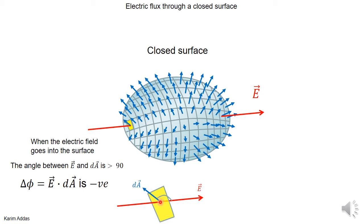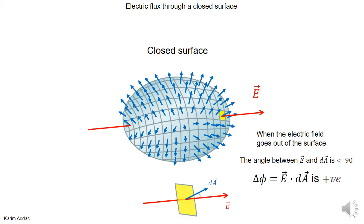In locations where the electric field line is going into the surface, the angle between the area vector and the electric field is bigger than 90 degrees. So when you compute the dot product, the electric flux — E dot dA — for these elements of area where the electric field line is going into the surface, you get a negative value.